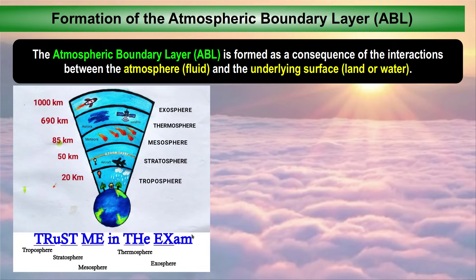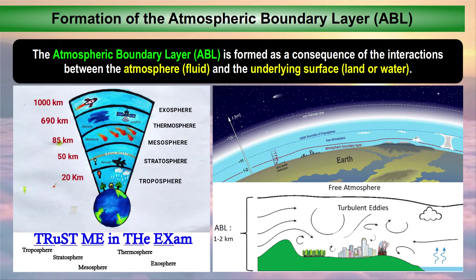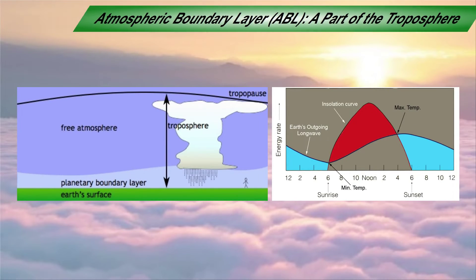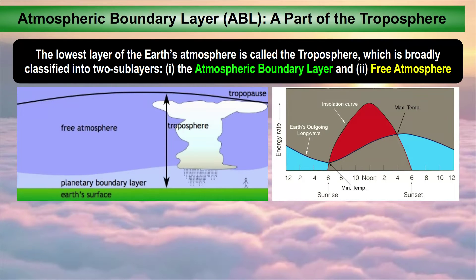The atmospheric boundary layer is the part of the troposphere, which is the lowest part of the atmosphere. If I want to divide the troposphere, I can classify it into two categories: the atmospheric boundary layer and the free atmosphere. But what should be the scientific basis for this classification? The basis is the response of these two layers to the incoming solar radiation.